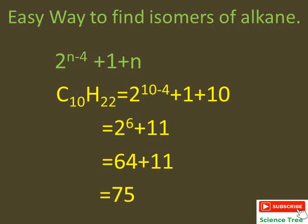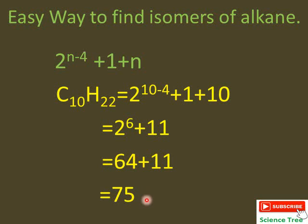For decane (C10), the formula is slightly changed: 2^(n−4) + 1 + n. Putting n=10: 10 minus 4 is 6, 2^6 = 64, and 1 plus 10 is 11, giving a total of 75 isomers of decane. In this way, just by using these 4 simple formulas, we can calculate and find out all the isomers of alkanes. Thank you so much.